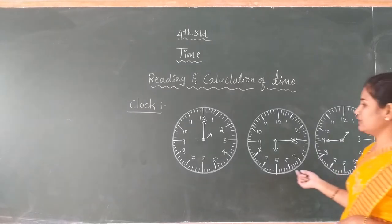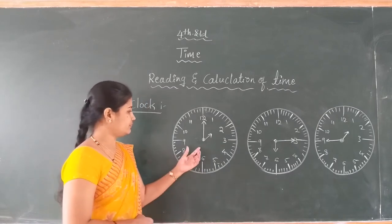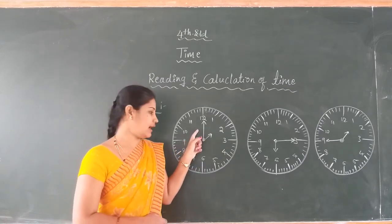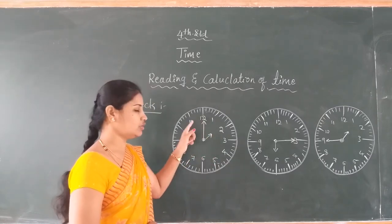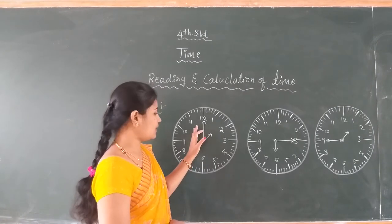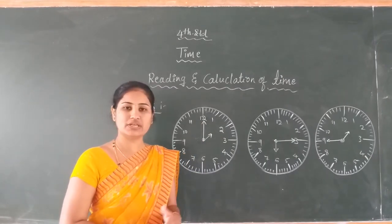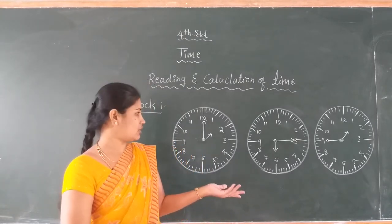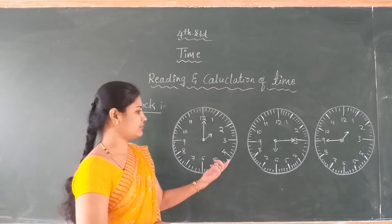Dear student, I draw three clocks. You already learned the clock has two hands — a long hand and a short hand. The long hand represents the minutes and the short hand represents the hour. The clock has numbers from 1 to 12. This is a 12-hour clock. There is also a 24-hour clock, which we will discuss in the next class.